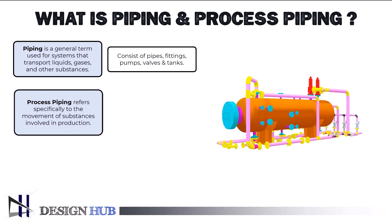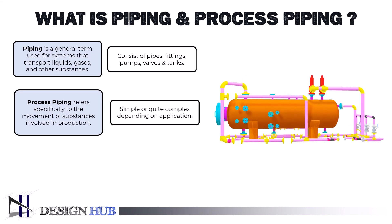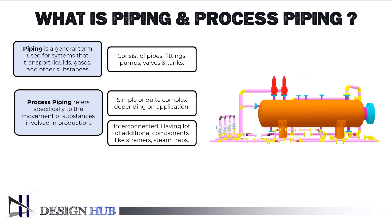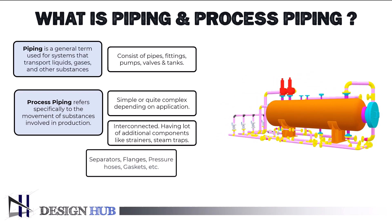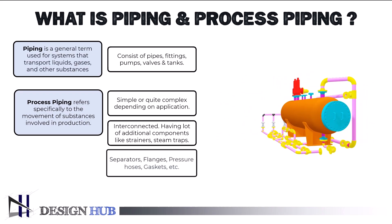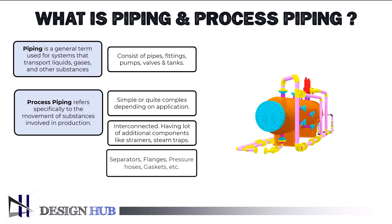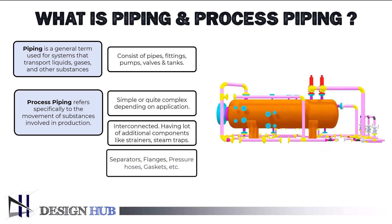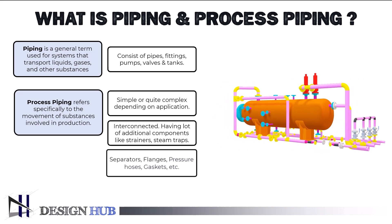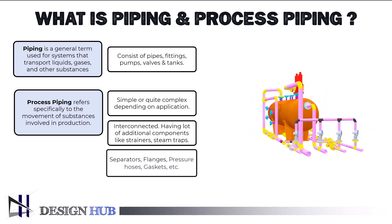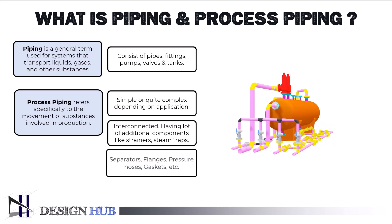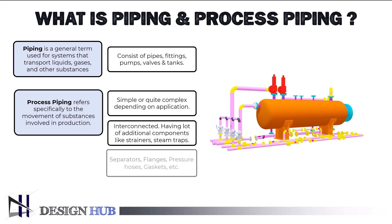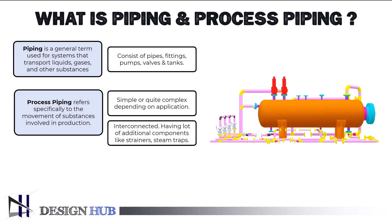Process piping systems can be quite complex as they are interconnected and often include additional components like separators, flanges, pressure hoses, traps, strainers, and gaskets. These components play a crucial role in separating and controlling the flow of substances.